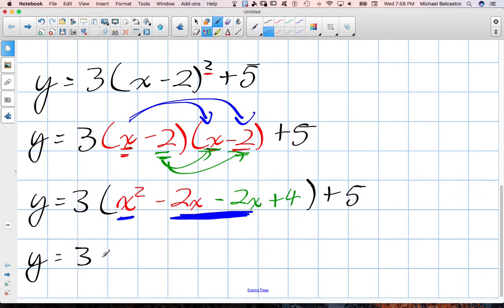So we'll say Y is equal to 3X squared. Negative 2X minus 2X. Think of it like just subtracting two integers. Negative 2 minus 2 is actually going to give us negative 4X, okay? The other term, plus 4, stays the same. The plus 5 out here stays the same. That's going to be the hardest part of this, okay?